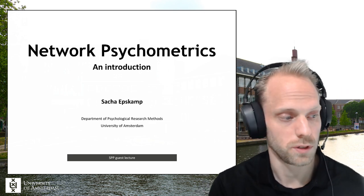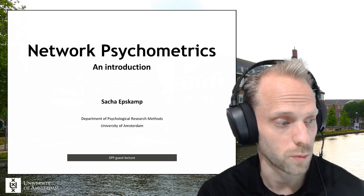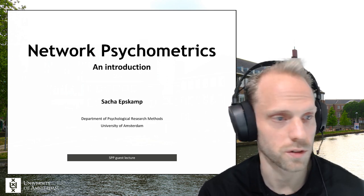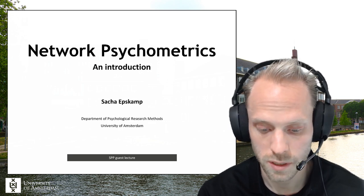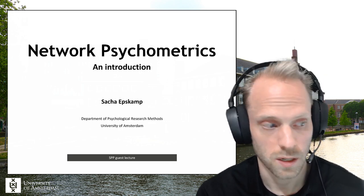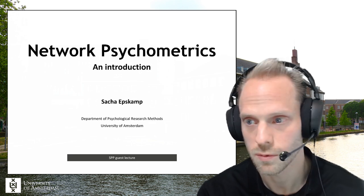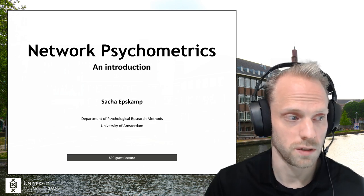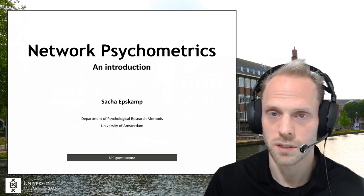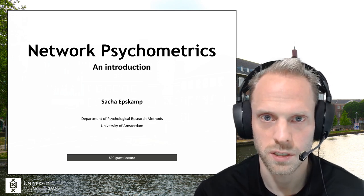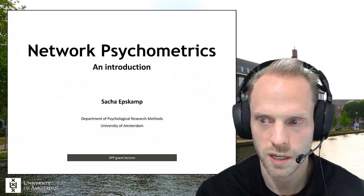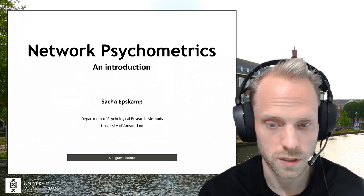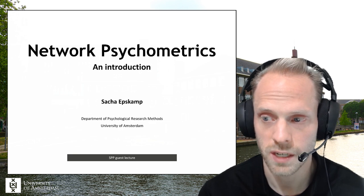In this talk I want to introduce the concept of network psychometrics, or network modeling in psychology, which has grown to be quite a popular field of study. The main idea behind this field stems from the network perspective of psychology — the idea that variables can influence each other — which was proposed about over 10 years ago mainly by Denny Borsboom, Angélique Cramer, Hans van der Maas, and others, leading to the field of estimating network models from data.